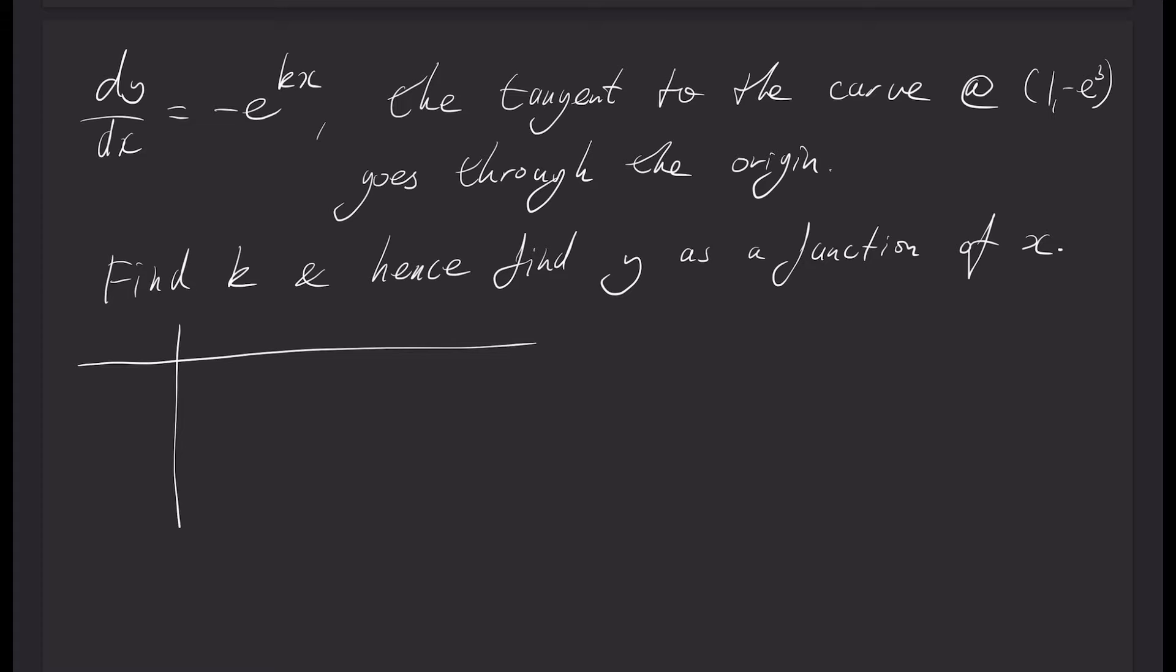So I've got this graph e to the negative kx and it's going to explode down like that. I know that this point here is the point (1, -e³). And what I know from the question is that the tangent at this point here goes through the origin. So that is a tangent. I'm just turning that into a right angle triangle. And what I know is that this distance here is 1 unit and this distance here is negative e³ units.